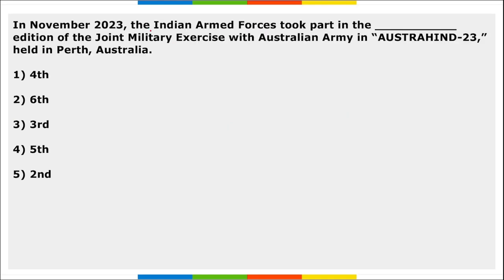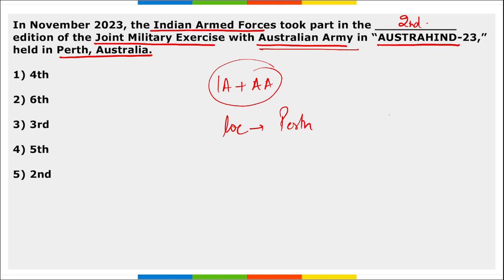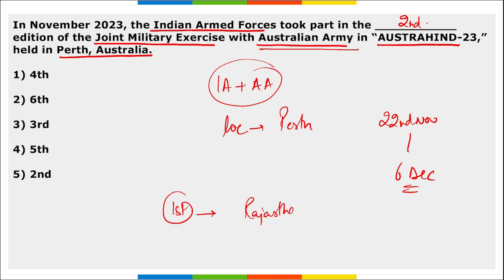Next: the Indian Armed Forces took part in which edition of the joint military exercise Austrahin 2023 with the Australian Army, held in Perth, Australia? This was the second edition of the joint military exercise Austrahin between the Indian Army and Australian Army. The location was Perth, Australia, and the exercise was held from 22nd November to 6th December. The first edition was held in Rajasthan, India.